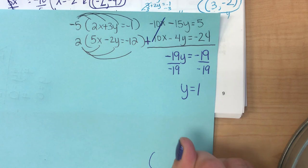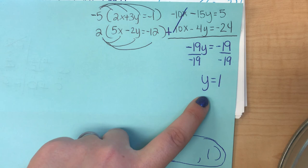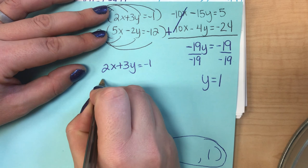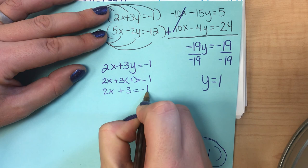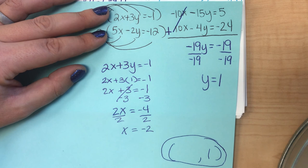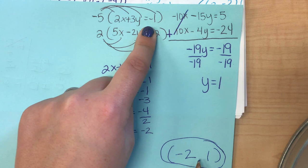We know y equals 1 is part of our answer. To find x, plug y equals 1 into the top original equation: 2x plus 3 times 1 equals negative 1, giving 2x plus 3 equals negative 1. Subtract 3 from both sides: 2x equals negative 4. Divide by 2: x equals negative 2. The final solution is (negative 2, 1). We can verify by plugging x equals negative 2 and y equals 1 into both original equations, getting negative 1 and negative 12.